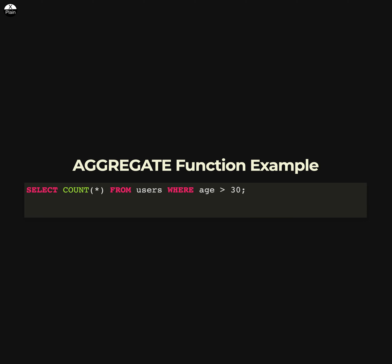This statement will count the number of rows in the users table where the age column has a value greater than 30. The COUNT(*) function is an aggregate function that returns the number of rows in a table. There are several other aggregate functions available in SQL including AVERAGE, SUM, MIN, and MAX. These functions allow you to perform calculations on the data in your tables and return a single result.